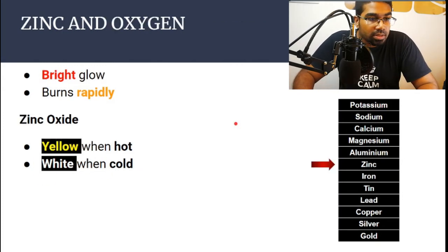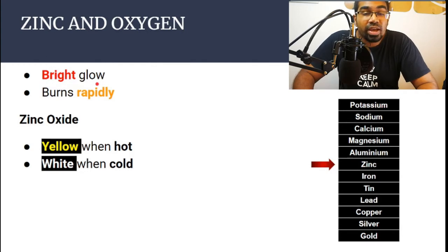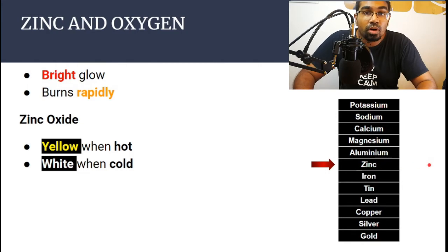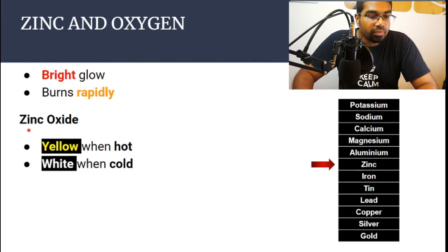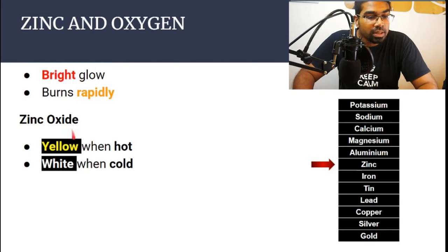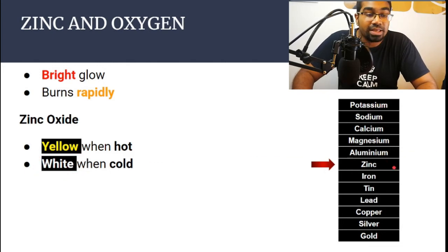Let's look at zinc. Zinc is below magnesium in the reactivity series. Zinc has a bright glow — so for magnesium we had a flame, but for zinc there is no longer a flame, only a glow, though it is a bright glow and it burns rapidly. The product formed is zinc oxide. Zinc oxide is very unique: it is yellow when hot, but after it cools down it becomes white.